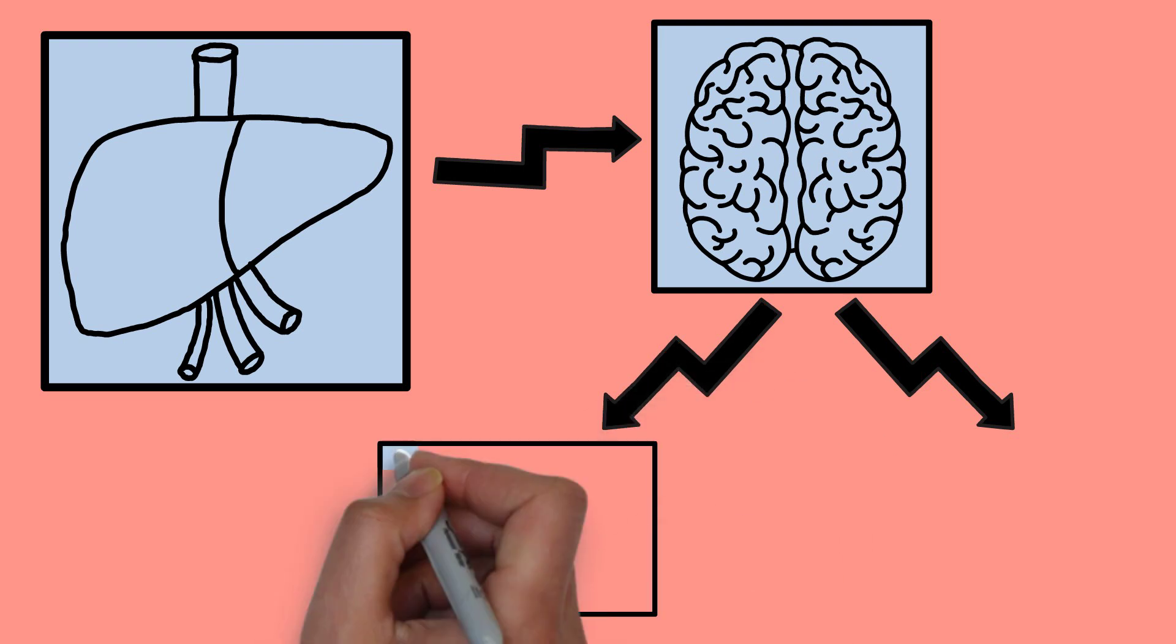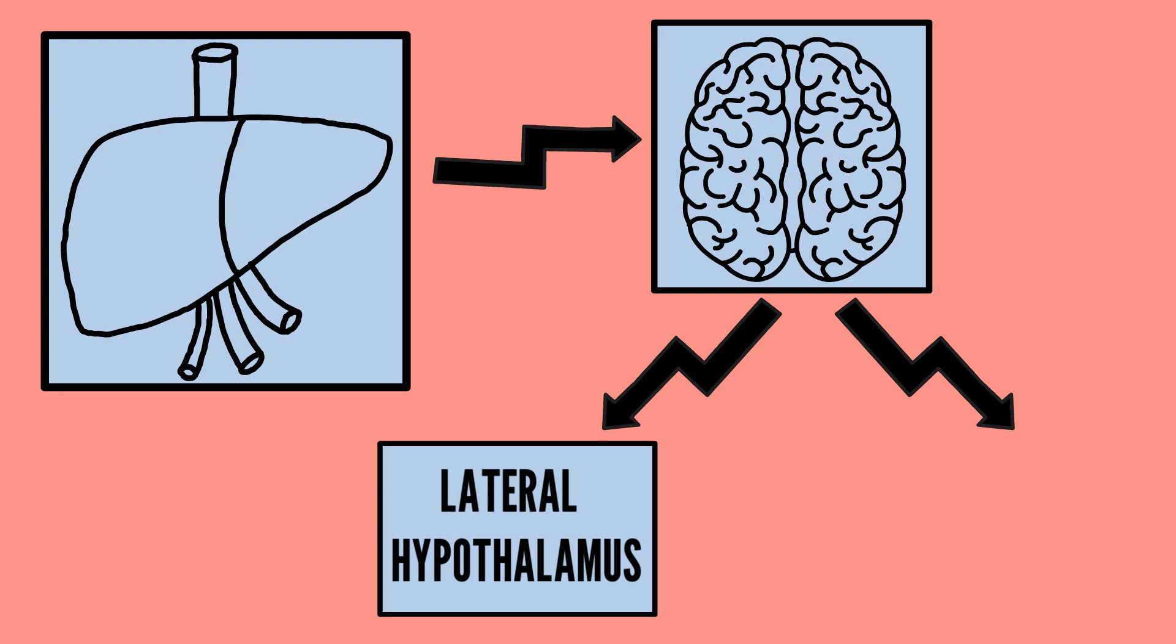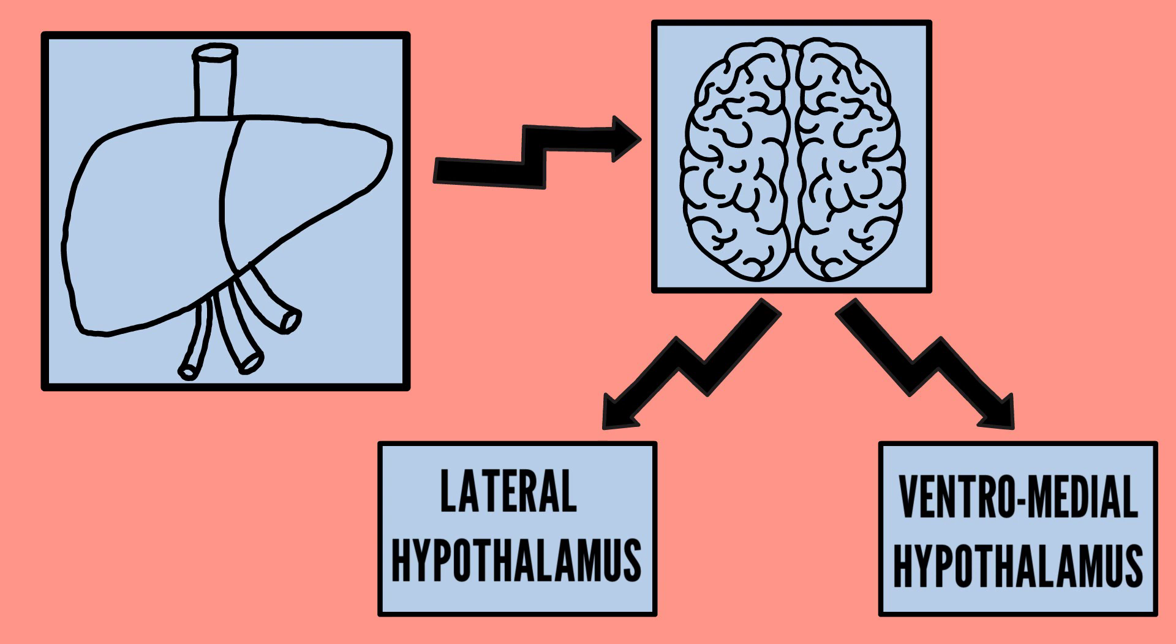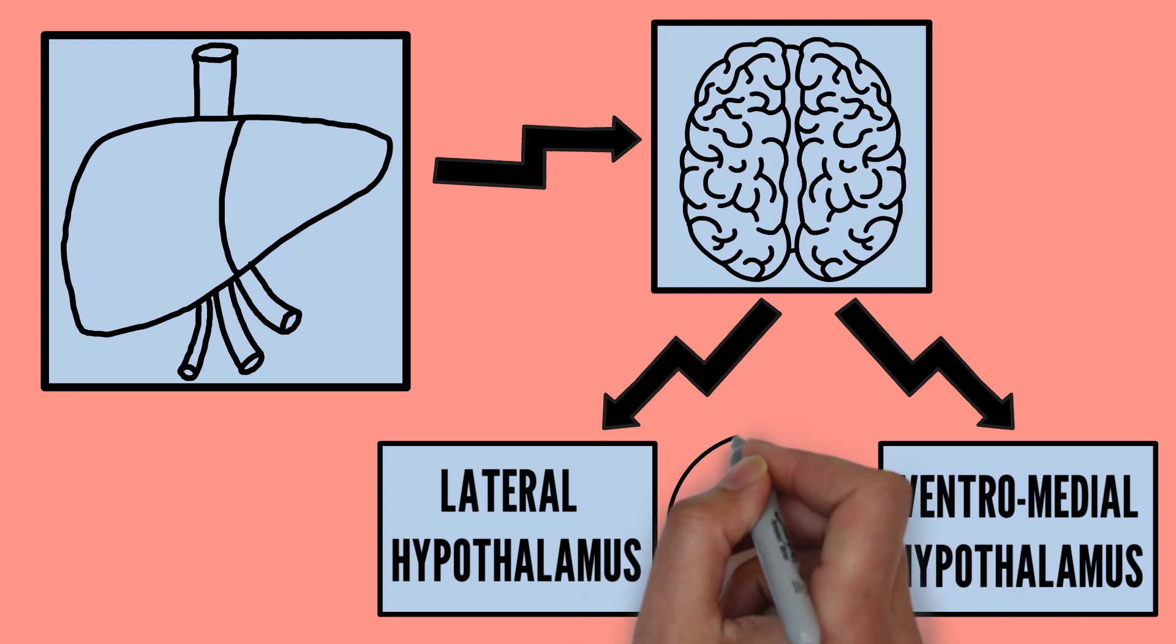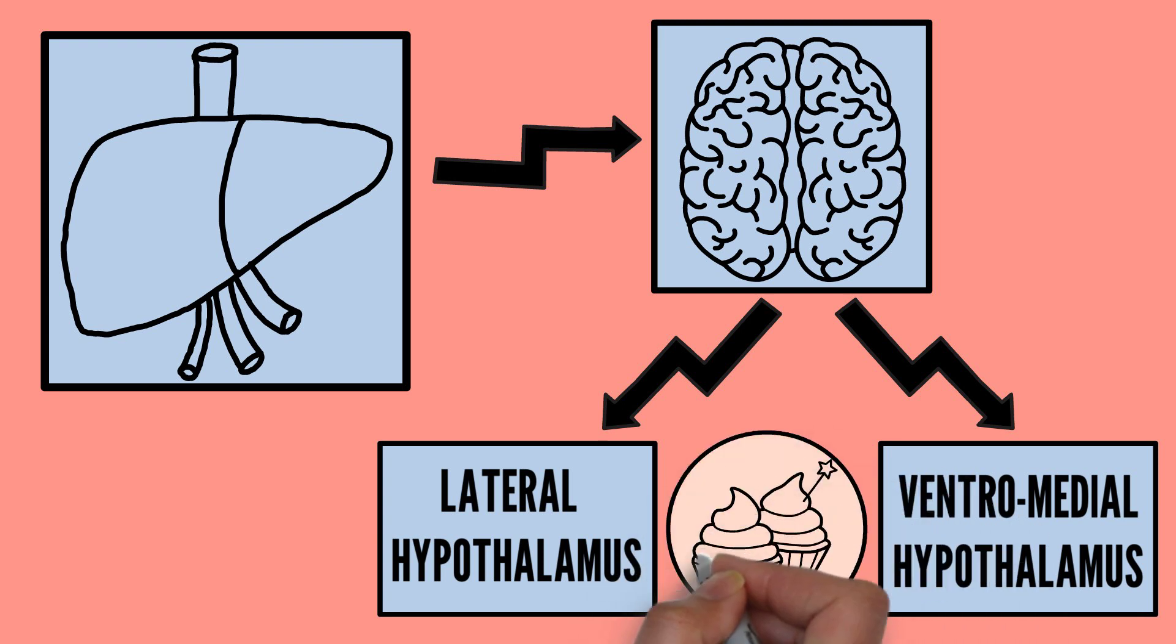The two regions of the hypothalamus that are involved in hunger are the lateral hypothalamus and the ventromedial hypothalamus. The lateral hypothalamus is considered to be the excitatory area. Animals eat when this area is stimulated. When it is damaged, animals stop eating and die of starvation.